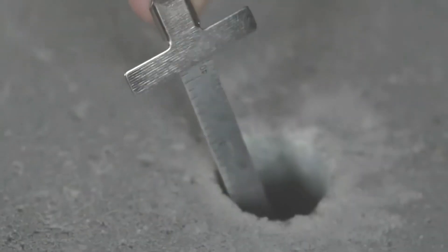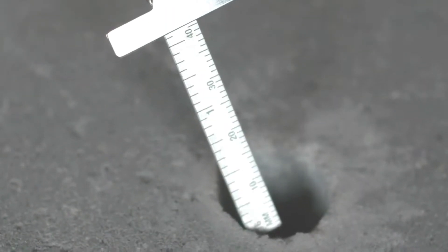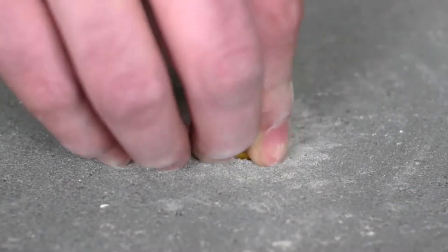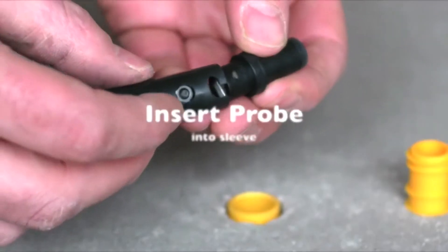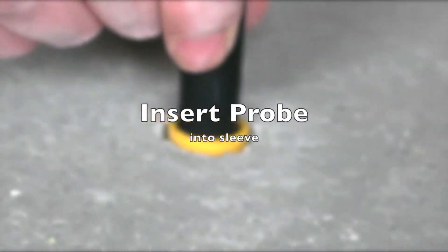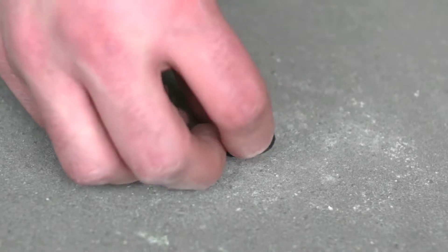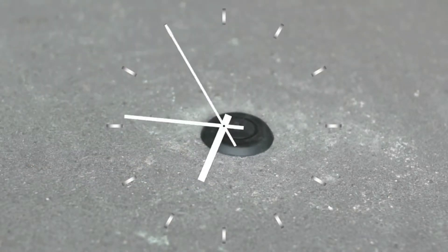simply drill a hole in the concrete 40% of the thickness of the slab. Push the sleeve into the hole, insert the Hygroi probe into the sleeve and cover with the cap. Leave for the standard test period.